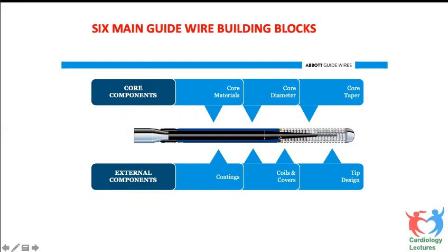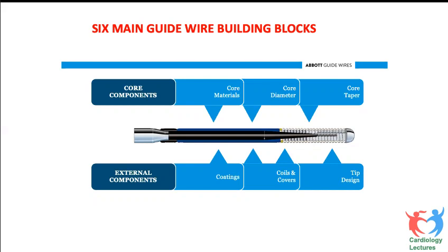The core material is either stainless steel, high tensile steel, or nitinol — the most common materials. Then there is core diameter: the larger the diameter, the more weight at the tip and less prolapsing. Third is core tapering — whether the core carries the same thickness all the way to the tip. If it does, there is more penetrability but less steerability and less ability to slip through a lesion.